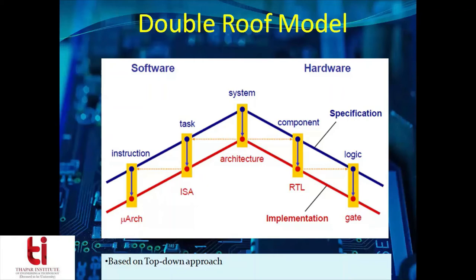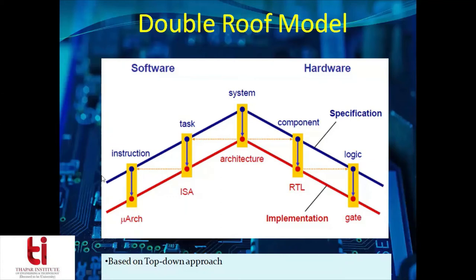One very successful model introduced under this methodology is the Double Roof Model. It defines the typical top-down approach to the design process. In this model, software and hardware both move together. There is an upper layer indicated in blue and a lower layer indicated in red for both hardware and software going hand in hand. For the software side, the system is broken down into tasks and then into the instruction level, whereas on the hardware side the system is broken into components which may be sub-blocks or subsystems and finally into the logic implementing them.